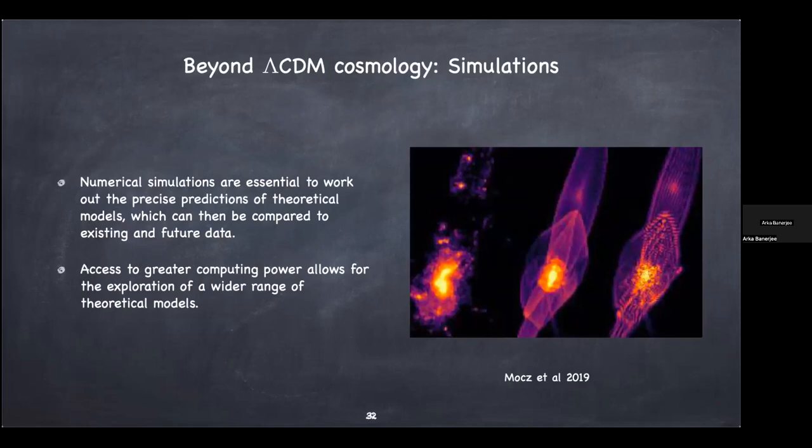To summarize this part: numerical simulations are essential to work out the precise predictions of theoretical models. You can write down a new particle physics Lagrangian — say a fancy theory of the dark sector — but you need simulations to translate that into things you can compare with real data. The interesting phenomenology appears in the nonlinear regime, so you absolutely need to depend on these simulations. In the last 10 to 15 years, access to much greater computing power has allowed us to explore a wide range of theoretical models and test them against data.